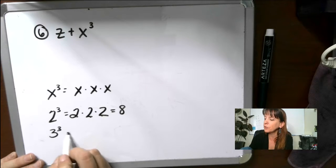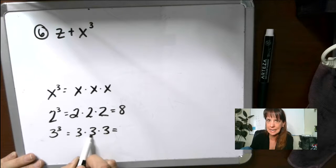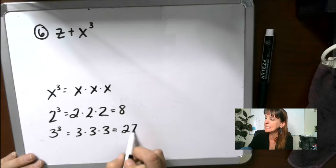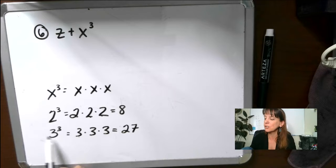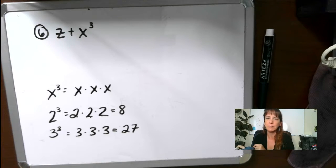If we have 3 to the third power, we've got 3 times 3 times 3. 3 times 3 is 9 times 3 is 27. It's a really common mistake to look at this and be like, oh, 3 times 3, that's 9, but you got to do it one more time and get that 27.